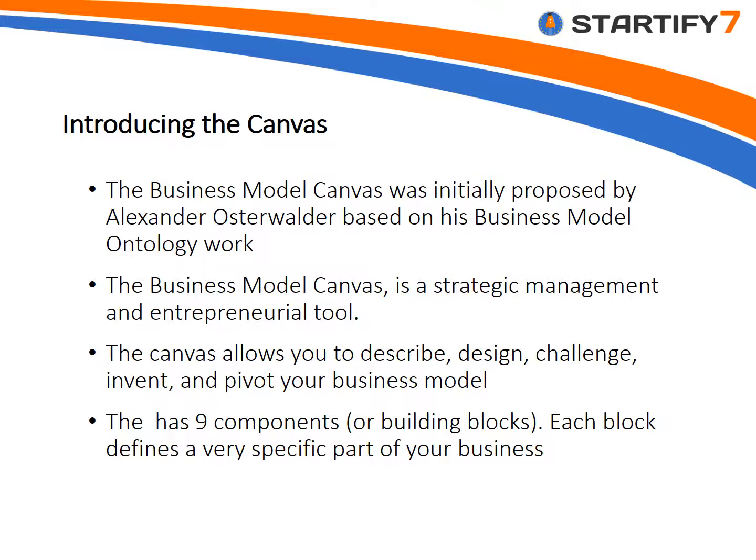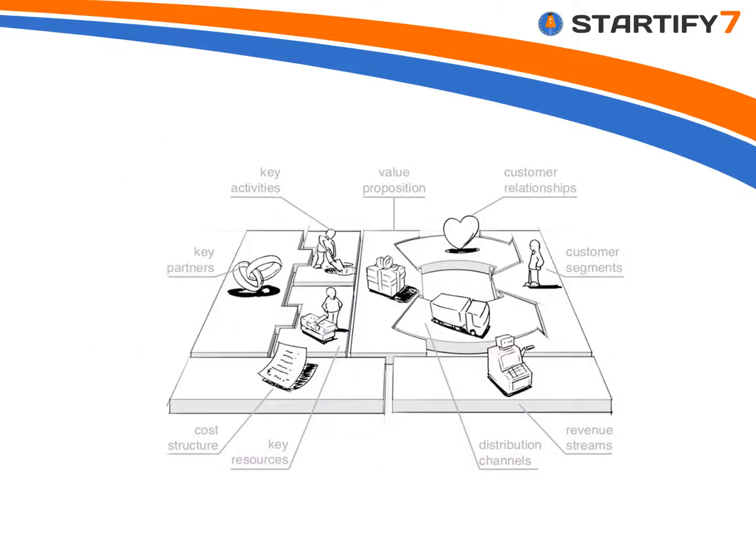The business model canvas has nine components or building blocks. Each block tries to get you to think about a very specific element or part of the business. It's quite nice to think of the business model canvas as a jigsaw — we know what all the pieces are, and we can try to put them together and think about how they relate to each other.